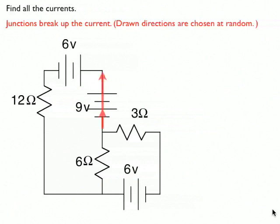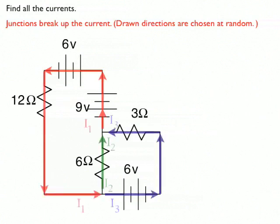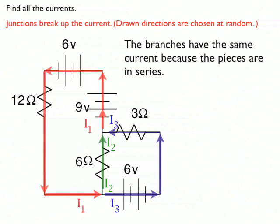To begin, I'm going to choose some directions for the current, and I'm going to pick it kind of randomly. So I start with my 9-volt battery and the current going up and around the left loop. And then when it hits the bottom junction, it splits, and that's where I've got I2 and I3.